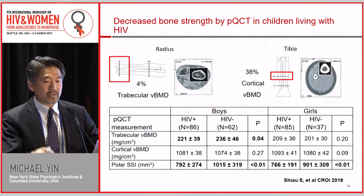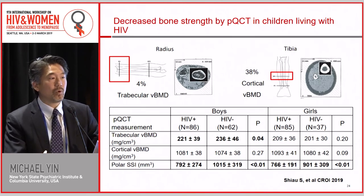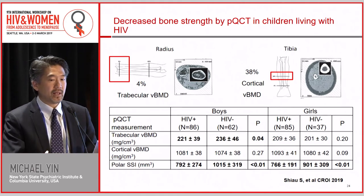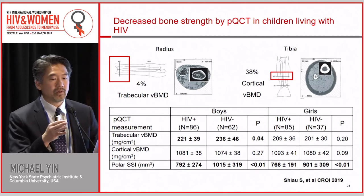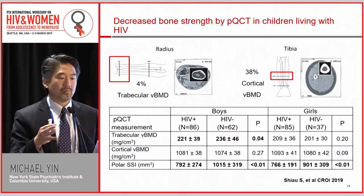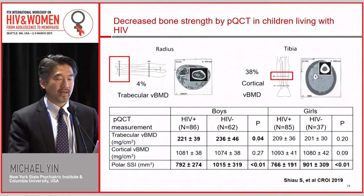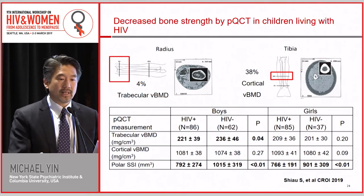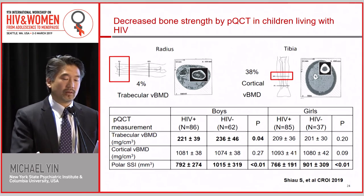At this CROI, Stephanie Hsiao is presenting data from this study using peripheral quantitative CT, which can separate out cortical bone and trabecular bone, and also measures a composite called polar SSI — the strain index — measuring bone strength for twisting and bending. In both girls and boys, the HIV-positive group had lower bone strength using this index. So HIV has an effect even in the younger group.